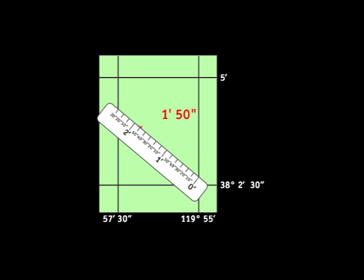In our example, the point of interest is 1 minute 50 seconds west of the eastern meridian at west 119 degrees 55 minutes. So the resulting longitude is west 119 degrees 56 minutes 50 seconds.